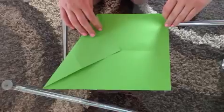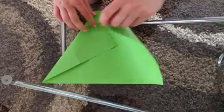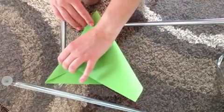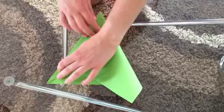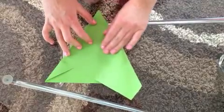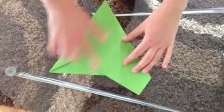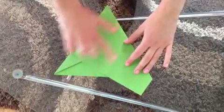You then need to take the top right hand corner and fold it across until it meets the other side. This side should now look like it's starting to form the triangle.